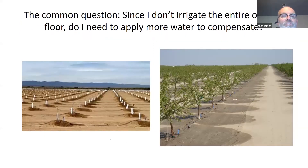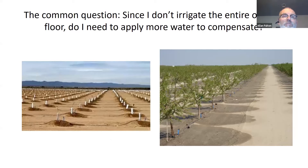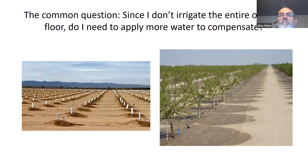More and more we see that microsprinkler irrigation or drip irrigation is being used in orchard production — it's highly predominant throughout our industries. As a result, a common question that comes up is: since I don't irrigate the entire orchard floor, do I need to apply more water to compensate?